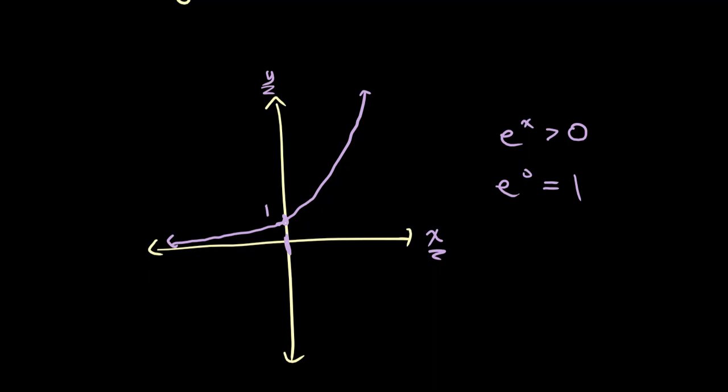What about the graph of ln of x? Before we draw the graph, we first need to understand the relationship between E to the power of x and ln of x. ln of x is log base E of x equals y, so E to the power of y equals x.